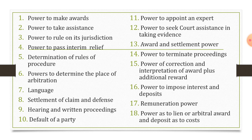Next is the power to rule on its jurisdiction. Every arbitrator has a defined extent of power, and within that only, he has the right to act accordingly. Those powers are laid down by the court or the laws. Next is the power to pass interim orders. Then, determination of the rule of procedure — the arbitrator has all the rights and powers to determine the rules and accordingly proceed with the arbitration process and give judgment. Then, power to determine the place of arbitration — with the free consent of the parties, the arbitrator has all powers to decide the place of arbitration. Then the language — language may not be a barrier during dispute resolution, so with the free consent of both parties, the arbitrator decides the language in which judgment is given.